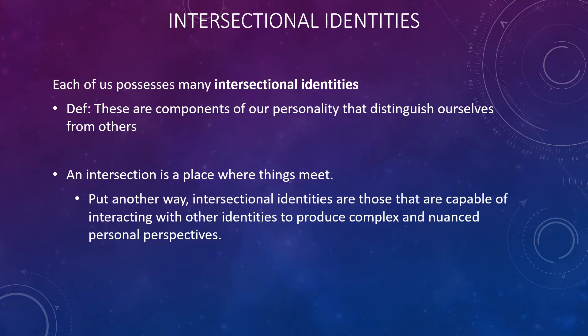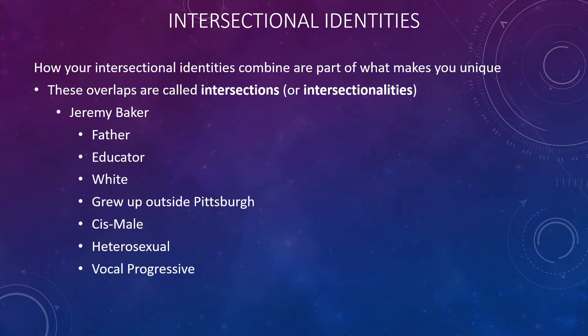Intersectional identities are components of our personal personality that distinguish ourselves from other people. An intersection is a place where things meet. Intersectional identities are those that are capable of interacting with our other identities to produce a more complex and more nuanced version of our personal perspective. How your intersectional identity combines with another intersectional identity is part of what makes you unique. Those overlaps are called the intersections, or sometimes they're called intersectionalities.